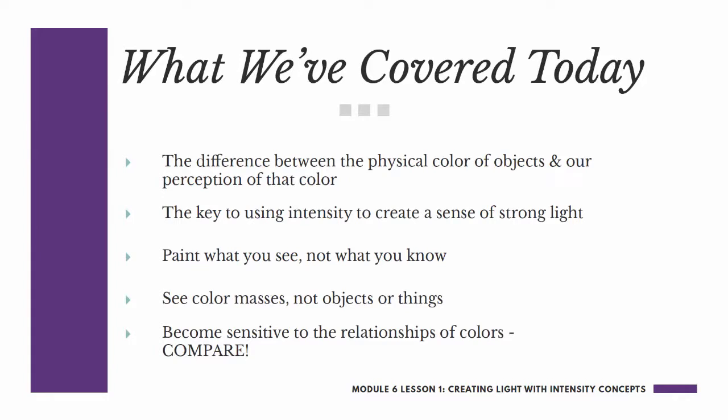What we've covered today is the difference between the physical color of objects and our perception of that color. We've talked about intensity as a way to create a strong sense of light. And three super important reminders: paint what you see, not what you know; see color masses, not objects or things; and work hard to become sensitive to the relationships of colors — compare, look closely, and compare. You'll find the directions for our exercise for lesson one below this video. Happy painting, y'all.